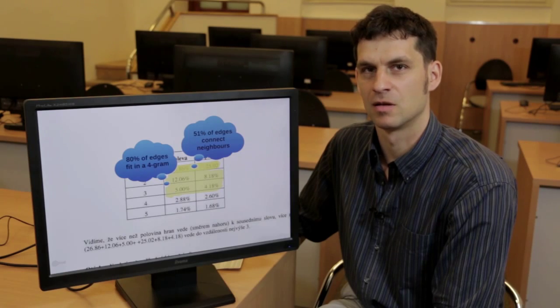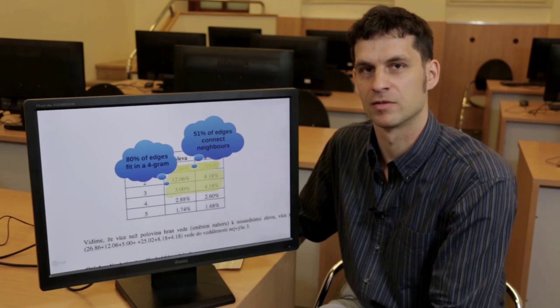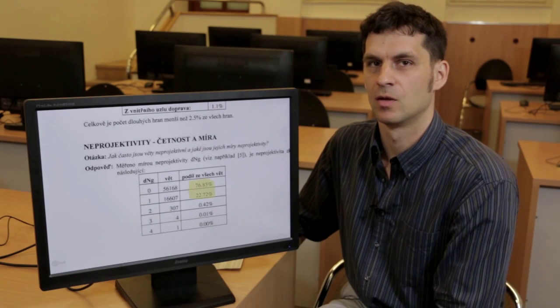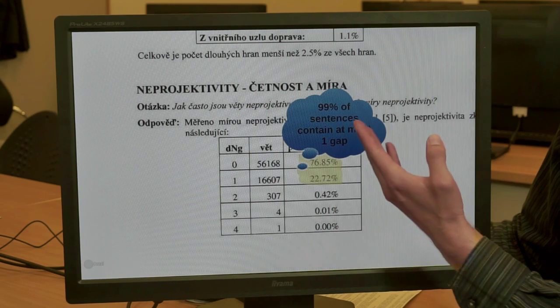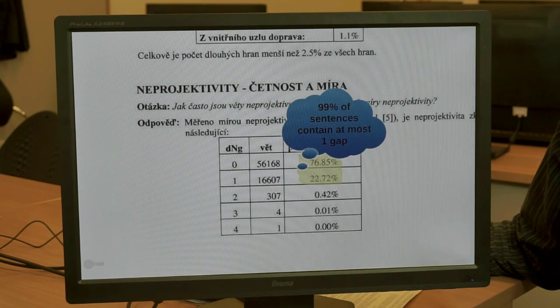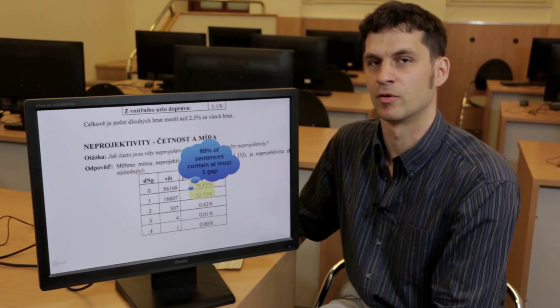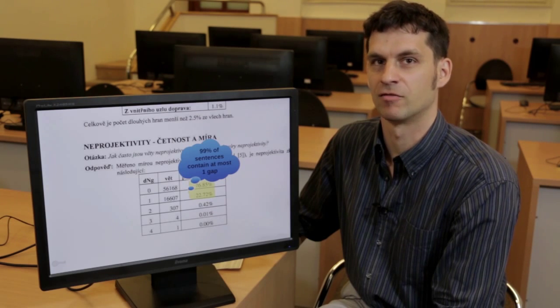And current machines are definitely strong enough to handle fourgrams. If we look at the number of non-projectivities, we see that even in a language as complex as Czech, 99% of sentences contain at most one gap. So only a small extension of the context-free approach is needed: mildly context-sensitive grammars.